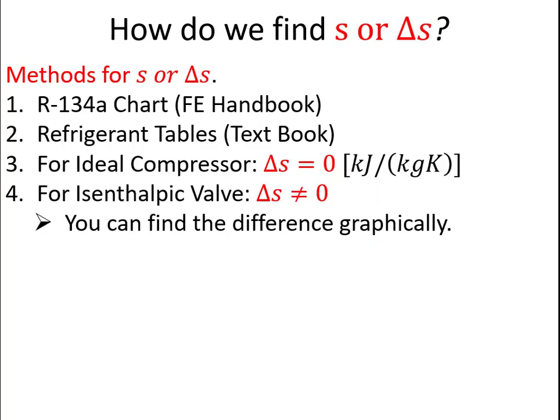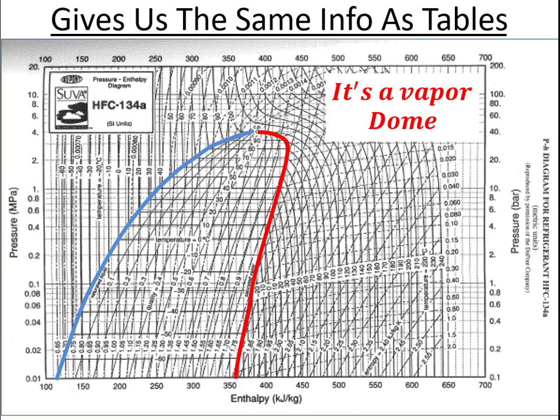If we're looking for S or delta S, we have many of the same processes that we can use. For this particular problem, we will solve it using a pH diagram. So here we remember that these are really just vapor dome diagrams and we're trying to fix the states by finding two independent intensive properties. Each of those properties will correspond to a line on a graph like this. So if we trace both of those lines, the intersection will be where we put our state point.